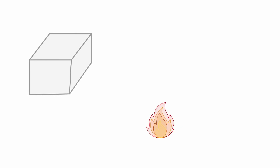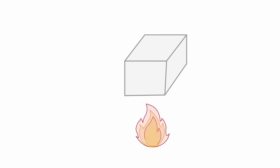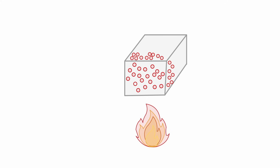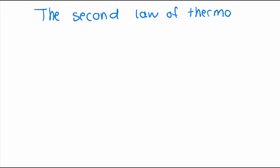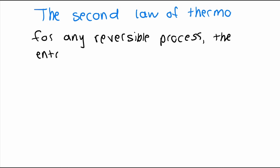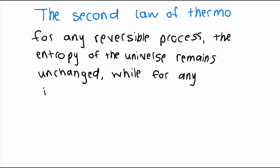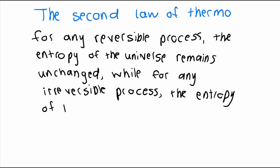In thermodynamics, there are certain phenomena we observe when considering heat. It always flows spontaneously from hotter to cooler regions of matter. This leads to the second law: for any reversible process, the entropy of the universe remains unchanged, while for an irreversible process, the entropy of the universe increases.